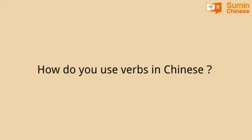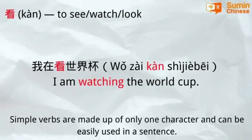How do you use verbs in Chinese? Simple verbs are made up of only one character and can be easily used in sentences. Use the verb 看 (to watch/look): 我在看世界杯 — I am watching the World Cup.